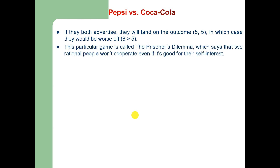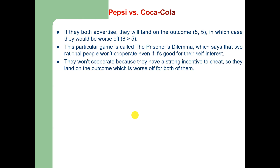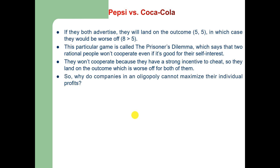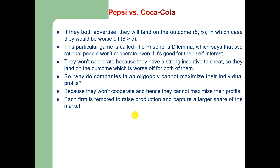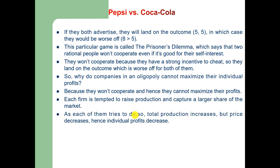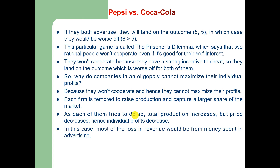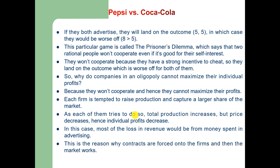This particular game is called the prisoner's dilemma, which says that two rational people would not cooperate even if cooperation is in their self-interest. They won't cooperate because they have a strong incentive to cheat, so they land on an outcome that is worse for both of them. This explains why companies in an oligopoly cannot maximize their individual profits — because they won't cooperate. Each firm is tempted to raise its production and capture a larger share of the market. As each tries to do so, total production increases but price decreases, and hence individual profits decrease.